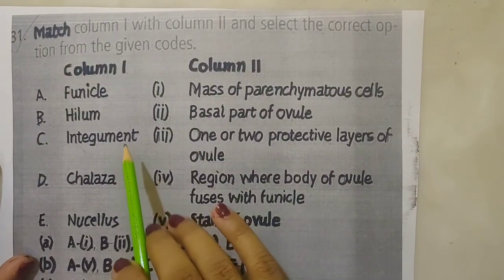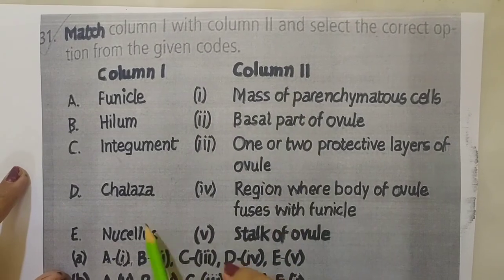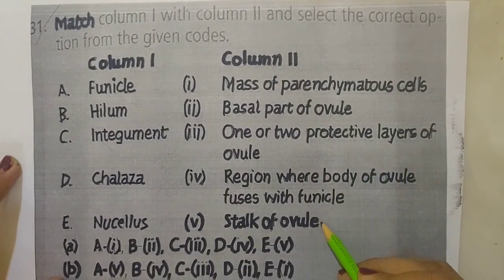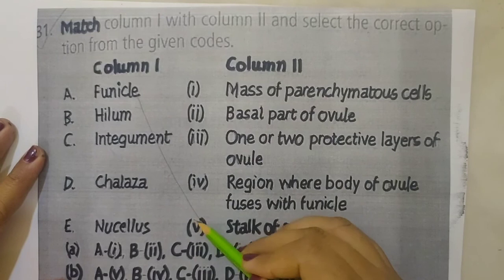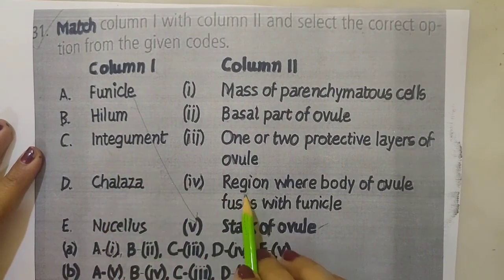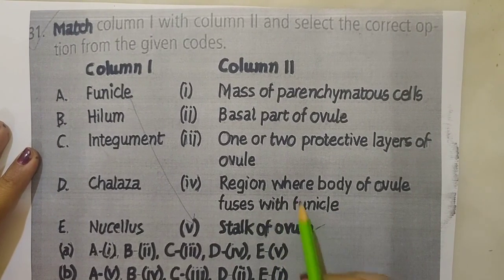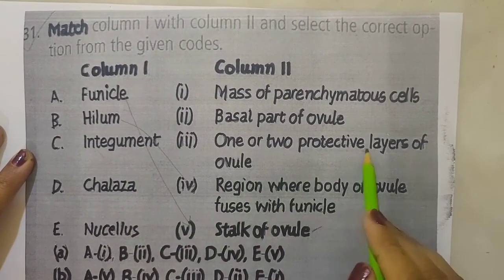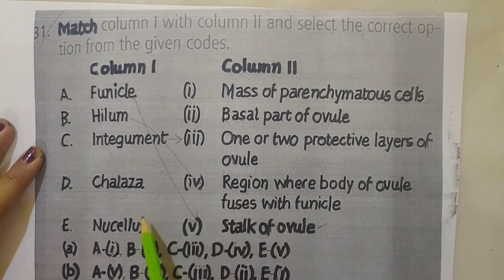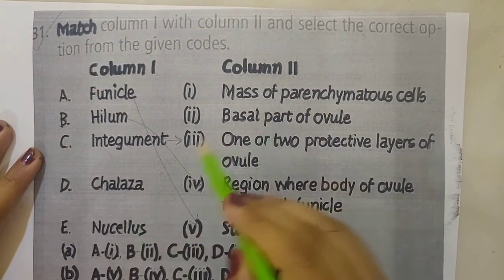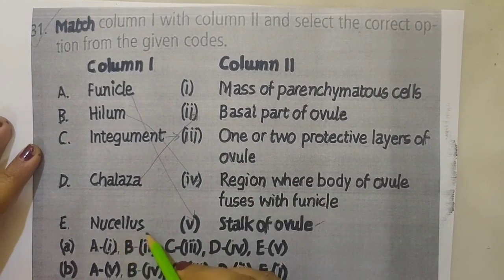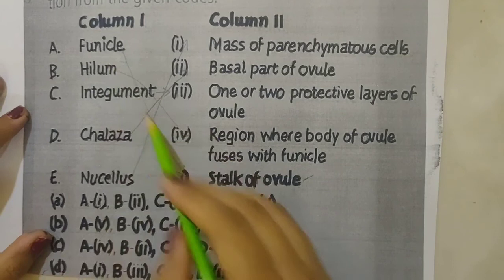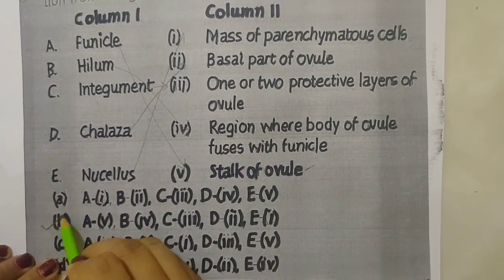The last question is a match-the-column exercise. Funicle matches with stalk of the ovule. Hilum is the region where the body of the ovule fuses with the funicle. Integuments are one or two protective layers of the ovule. The chalazal end is the basal part of the ovule. And nucellus is the mass of parenchymatous cells. All of these match correctly with option B.